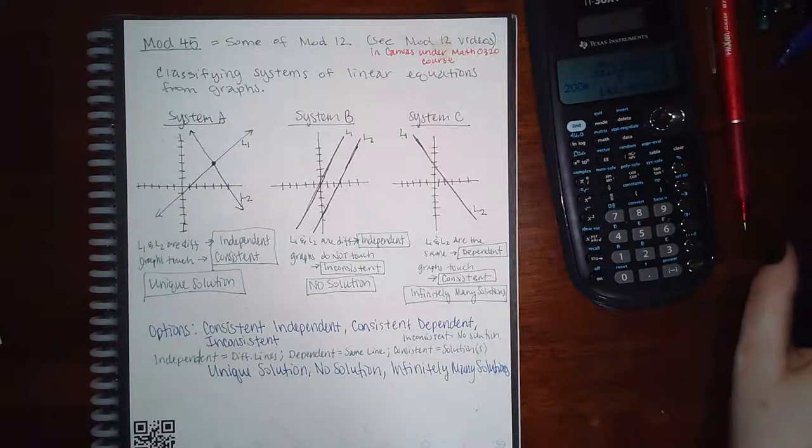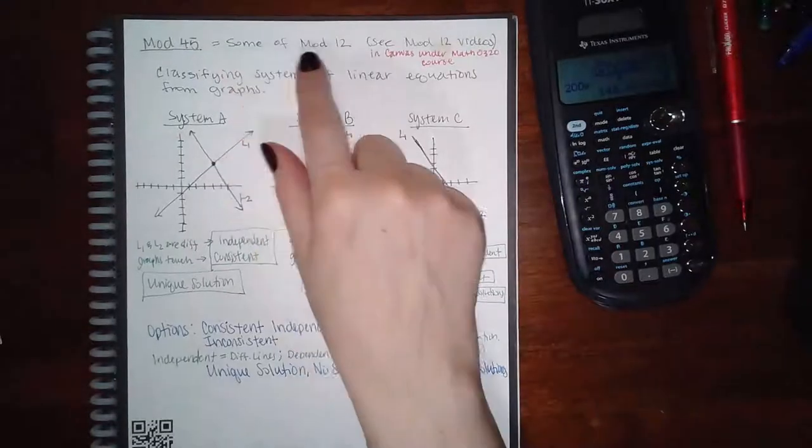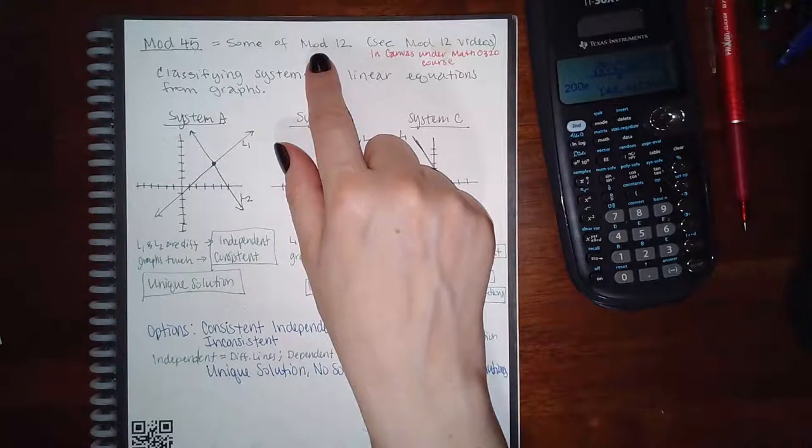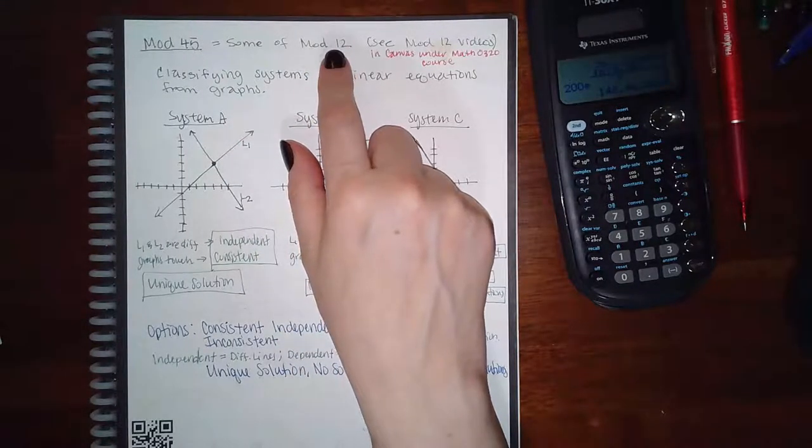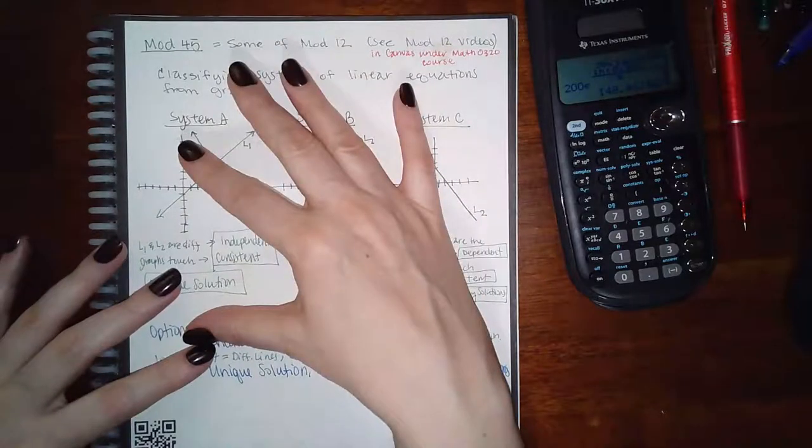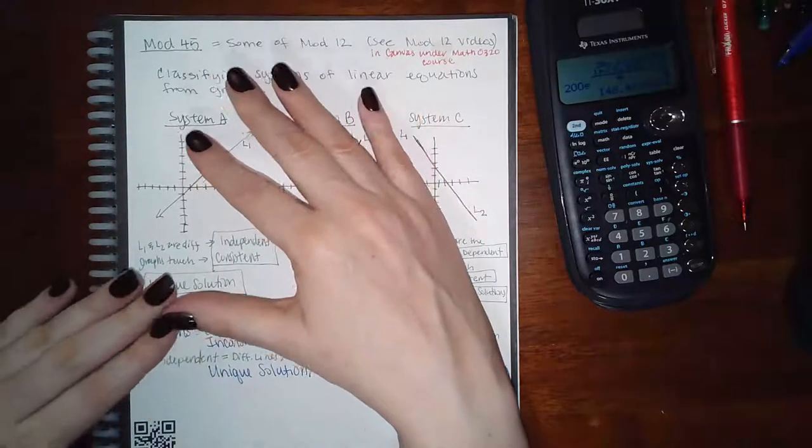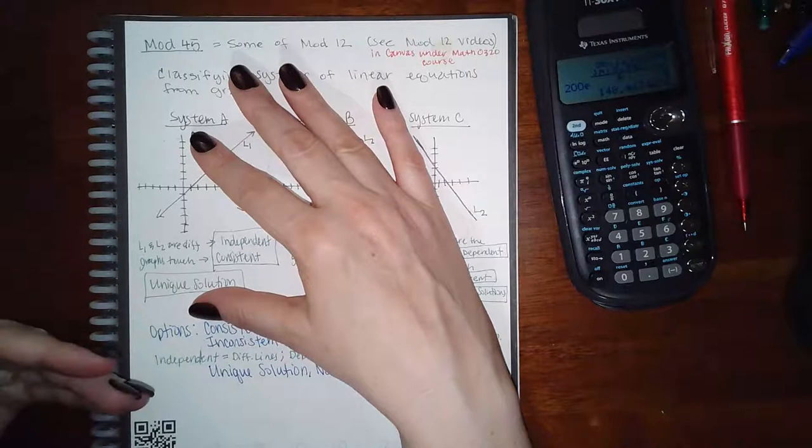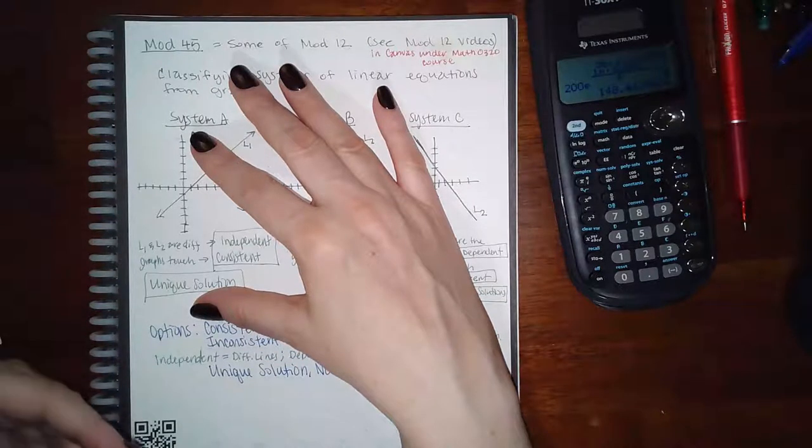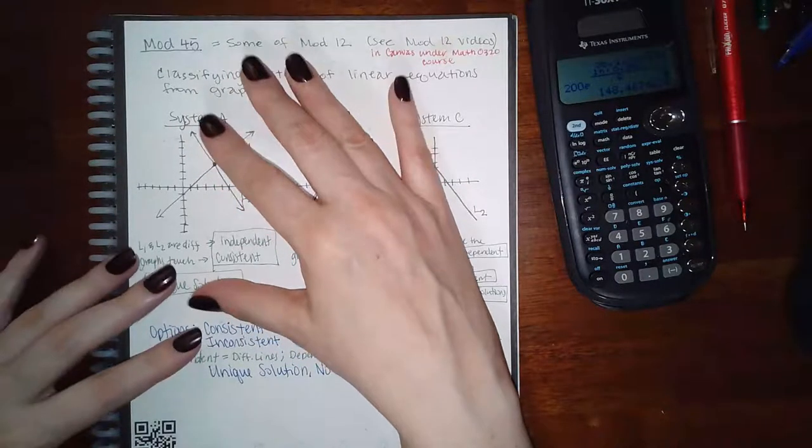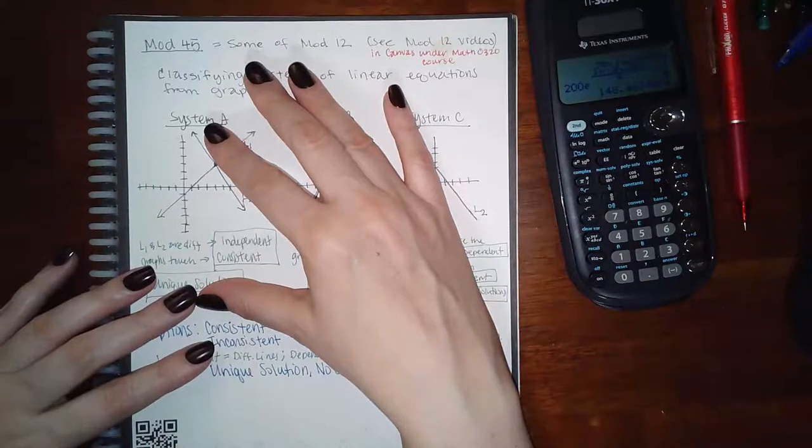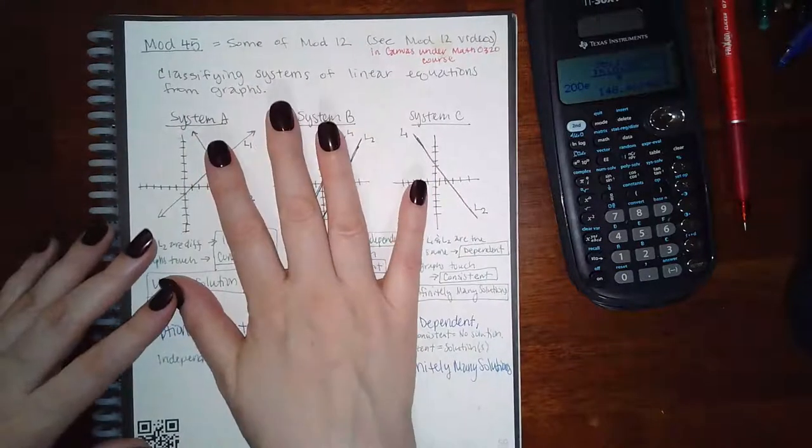This is Module 45. Almost all of the topics in Module 45 can be found in Module 12. If Module 45 is completely finished for you already based on what you did in 320, you might still have some topics to work on in Module 45. If not, there should only be one topic that you haven't seen, and that's the one I'm going to go over right now.